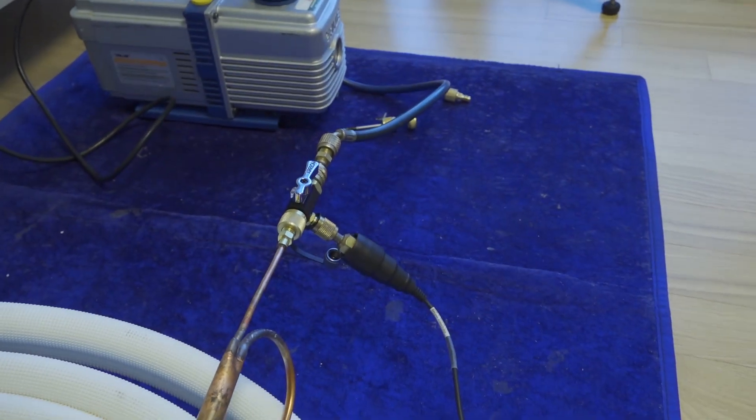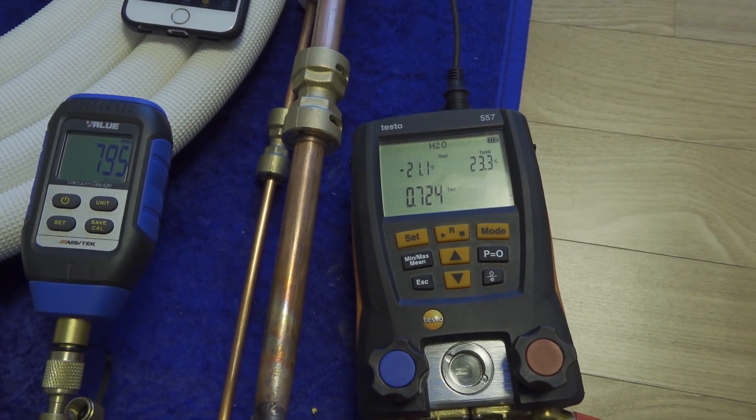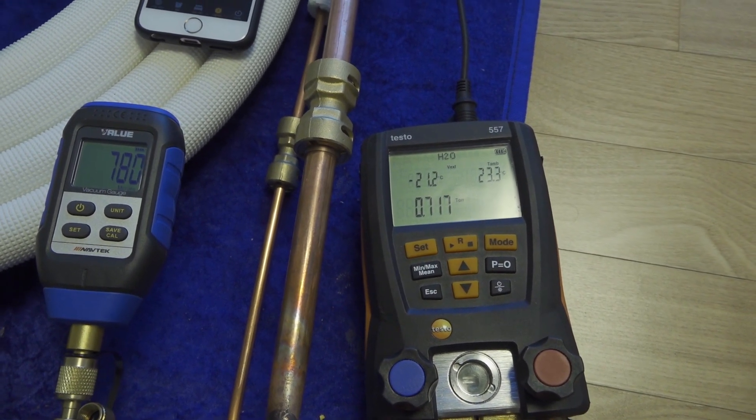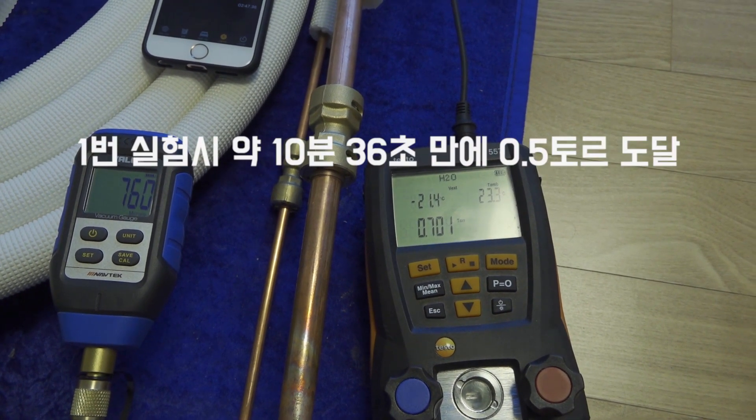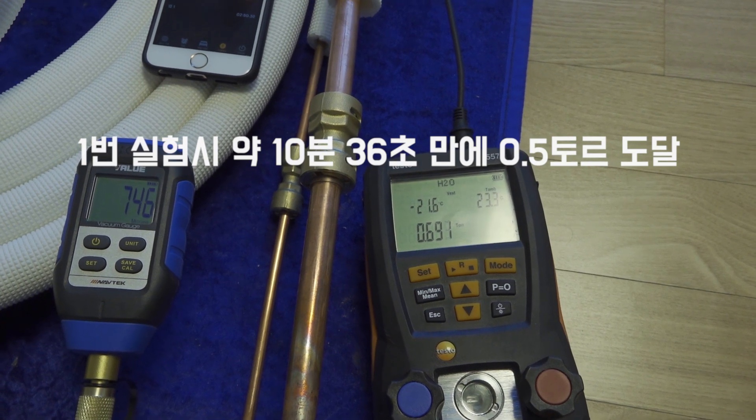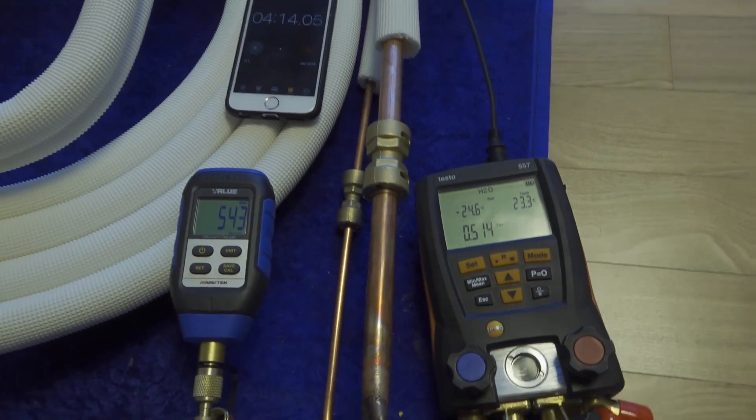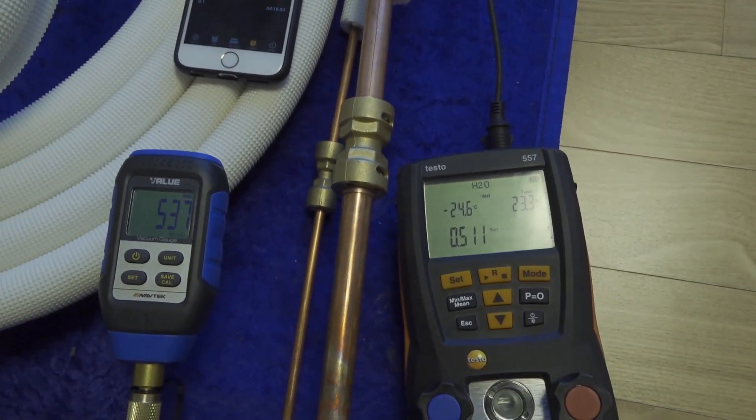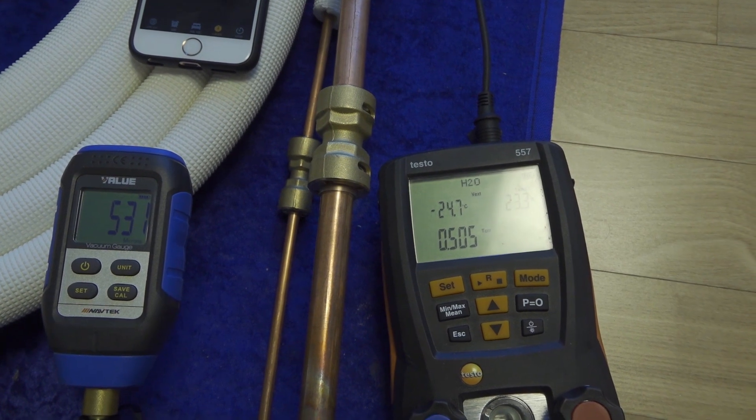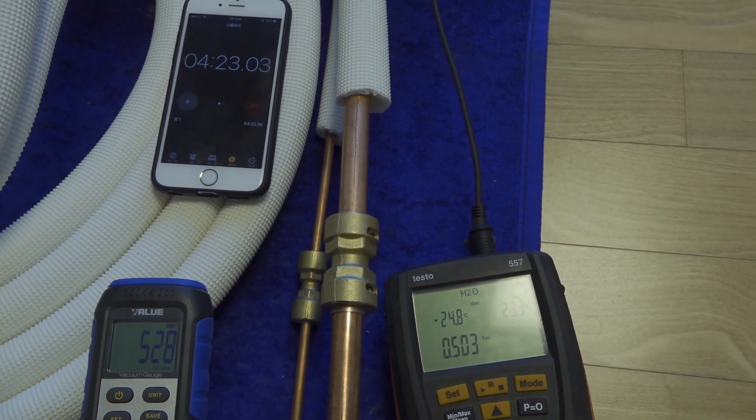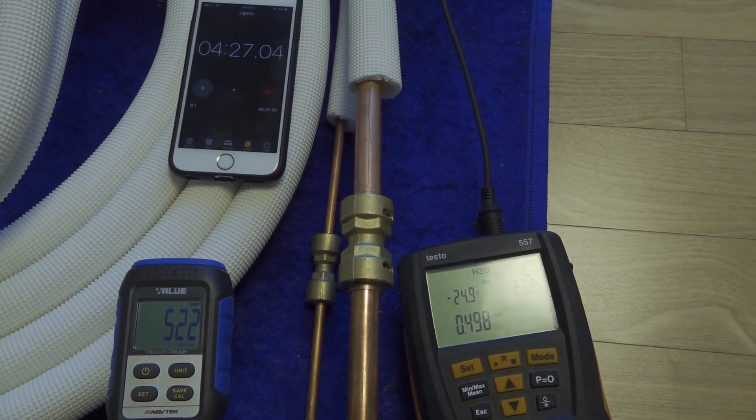I used only the core removal valve, and the time was much faster than before. I ran for 12 minutes and got over 0.4 Torr. It dropped below 0.5 Torr. Currently it's 0.508, almost at 0.5 Torr, and based on the 557 reading, it took about 4 minutes 26 seconds to reach 0.5 Torr.